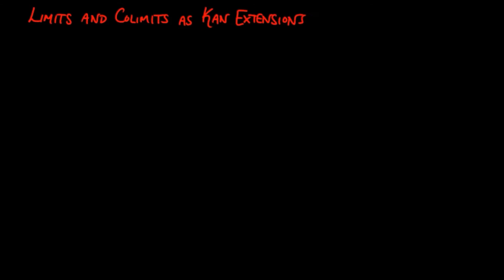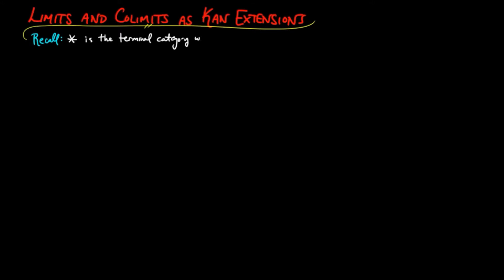In this section we show how to express limits and co-limits as Kan extensions. Recall that, one, we use the asterisk symbol to denote the terminal category with one object and one morphism, and the unique functor from a category I to the terminal category by a shriek symbol with subscript I.